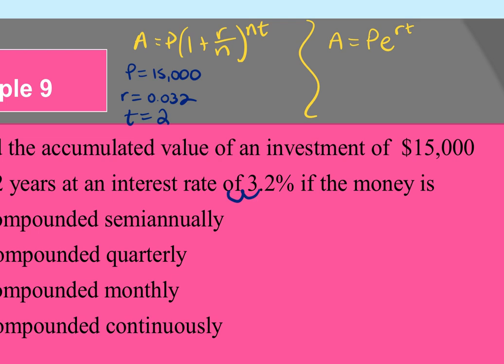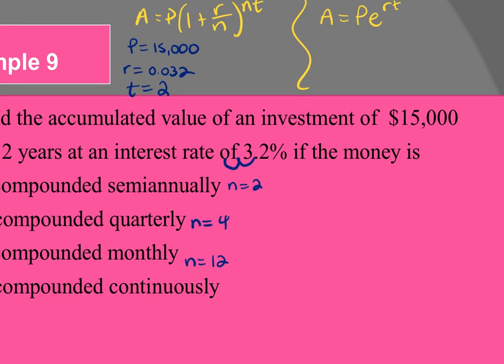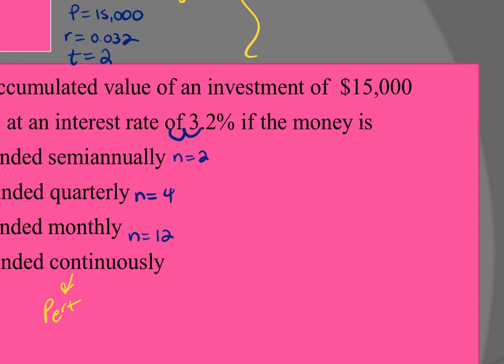What changes between parts is n. Semi-annually means twice per year (n = 2); quarterly means four times (n = 4); monthly means 12 times; weekly means 52 times; daily means 365 times. For part a (semi-annual): A = 15,000 × (1 + 0.032/2)^(2×2). Type it into the calculator keeping the fraction inside and raising to the power of 4.